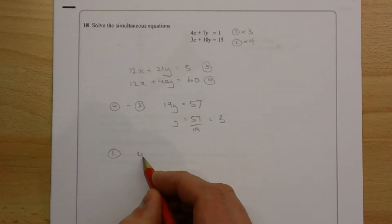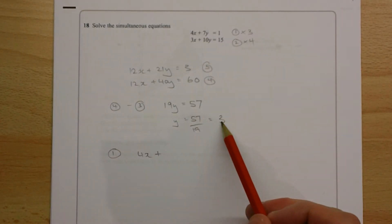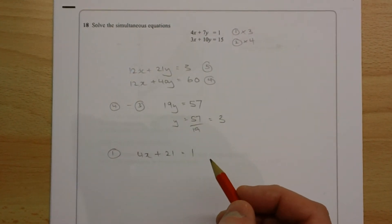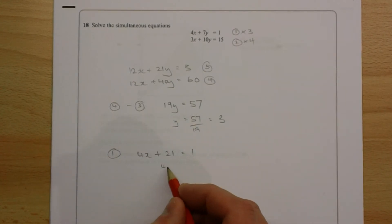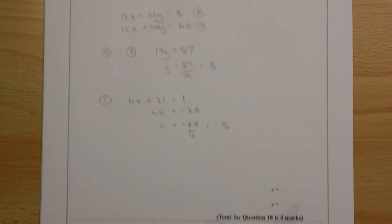So we've got 4x plus 7y. Now we know that y is equal to 3, so 7y is 21. And what we've done is set up a simple linear equation which we can solve to find x. Subtract 21, divide through by 4, x is equal to minus 5.